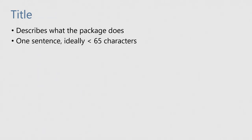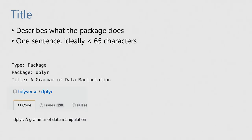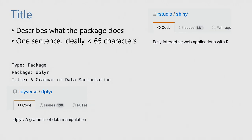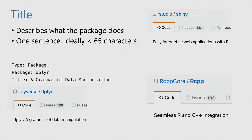A title for your package describes what the package does. It has to be one sentence and ideally less than 65 characters. This goes in the description file, but if you share your package on GitHub it also goes on top of the GitHub page and in Google preview results. Good examples: dplyr is 'a grammar of data manipulation,' Shiny is 'easy interactive web applications with R,' Rcpp is 'seamless R and C++ integration.' What's nice is that even though these are short, they tell you what the package does and give you a sense of the value — it's not just 'R and C++ integration,' it's seamless integration.